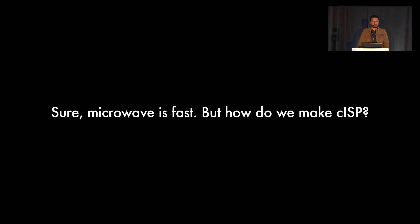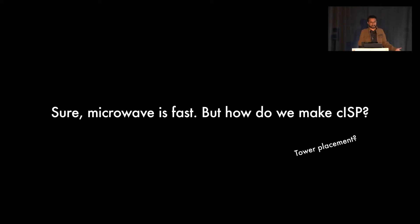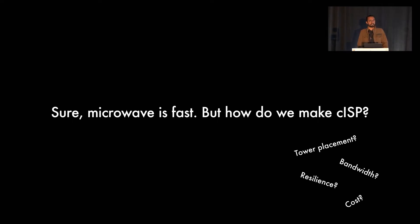Microwave networks are really fast, but current deployments are basically point-to-point links designed for a very special application. How do we use that technology to make a general-purpose CISP? That raises a lot of questions: where do we place the towers? What about the low bandwidth compared to fiber? Will it be resilient to weather? How much will it cost? To answer these questions, let's dive into CISP design.